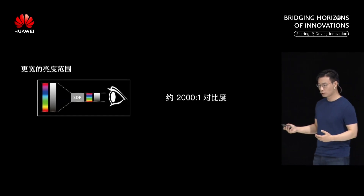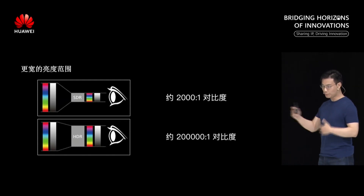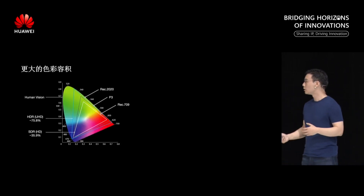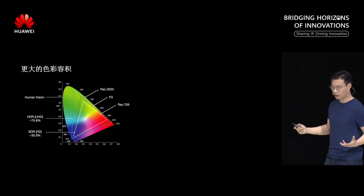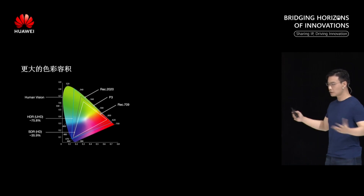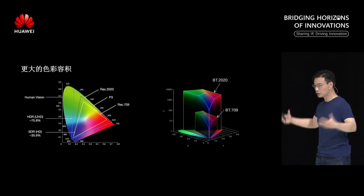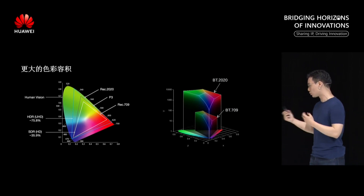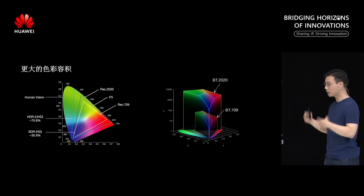We see the transition from SDR — the 2,000 to 1 contrast ratio — to about 200,000 to 1 contrast ratio with HDR Vivid. That means there is a 100-fold more possibility for our innovation. We also see a wider color gamut: it was Rec. 709, then P3, and then Rec. 2020 brought by HDR Vivid. Together with the improving HDR range, there are several orders of magnitude of increase in terms of the potential colors we can choose from.